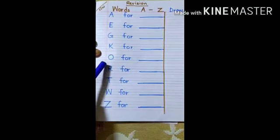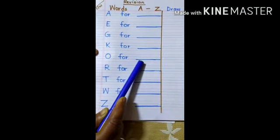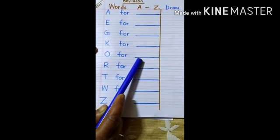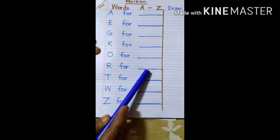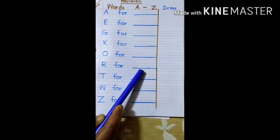O for orange. O R A N G E, orange. R for rat. R A T, rat.